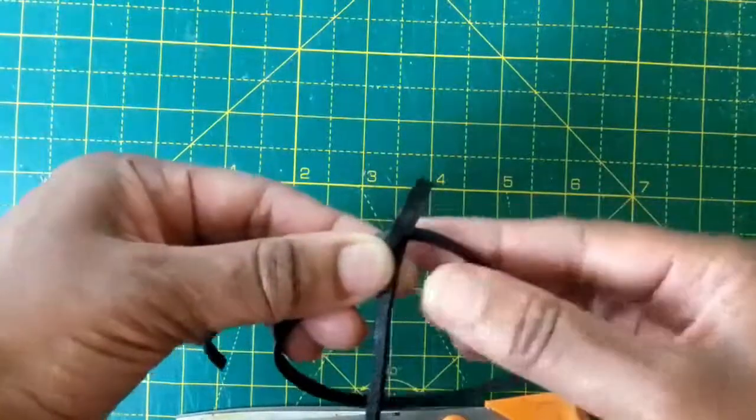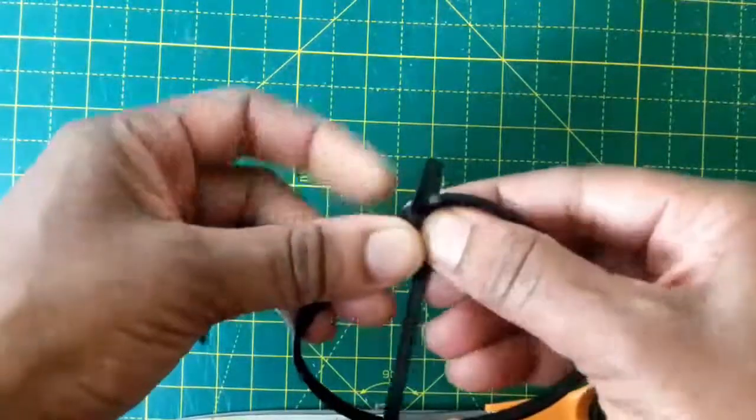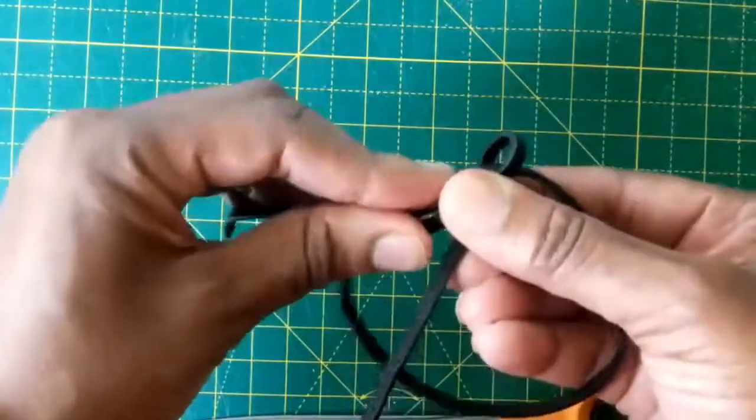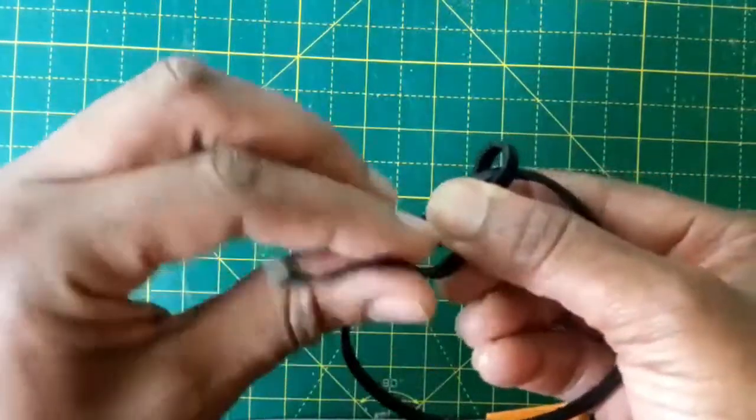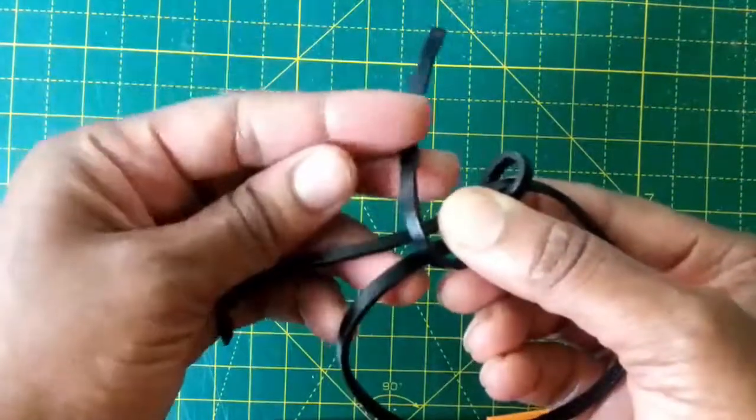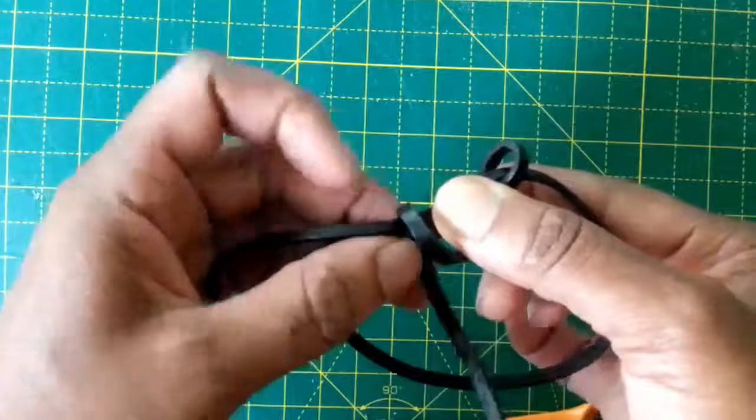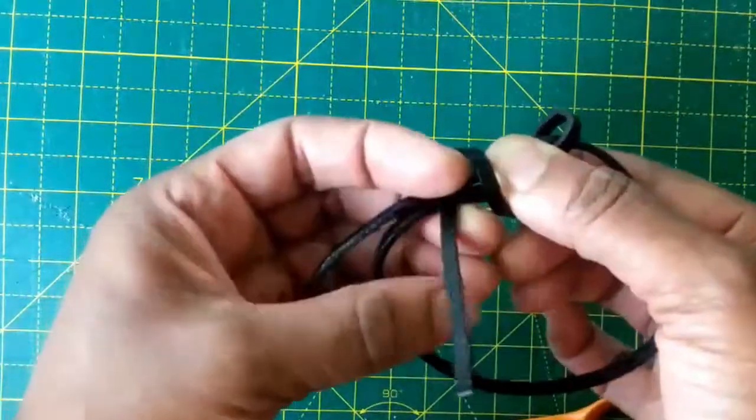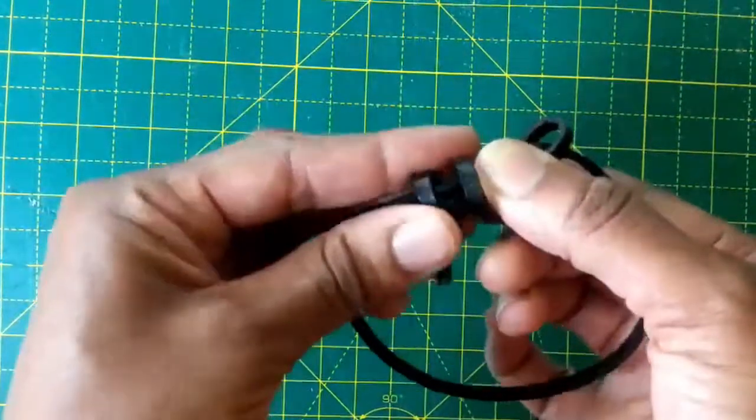It can be quite fiddly, so just hold on to that circle that you've made, that loop that you've made. And then we take the end again and we wrap it around and then through. Wrap it around again and then through.